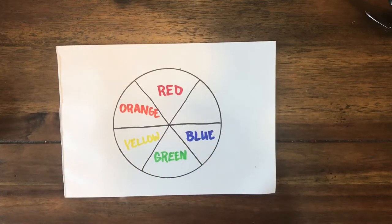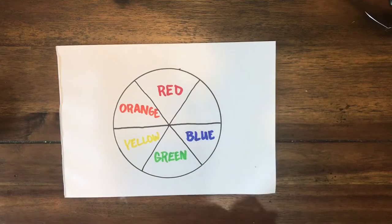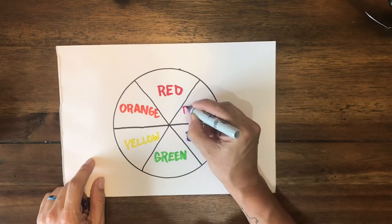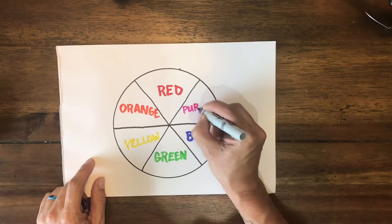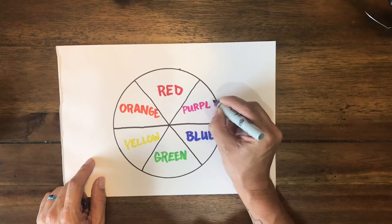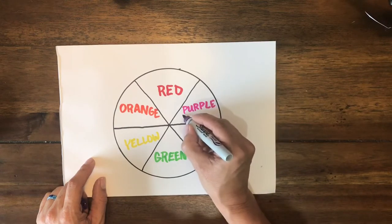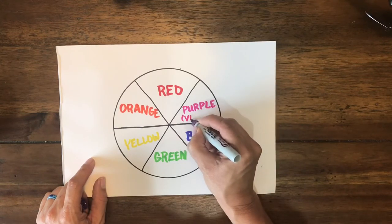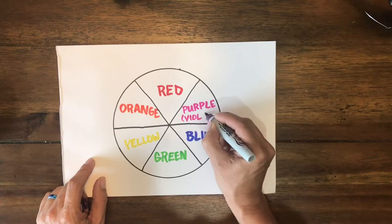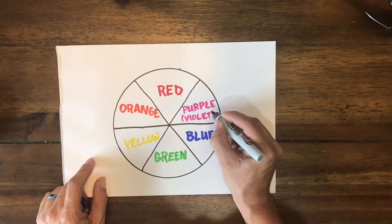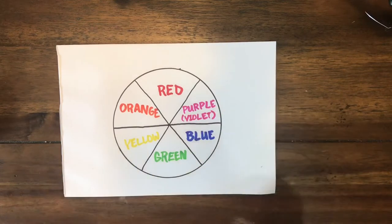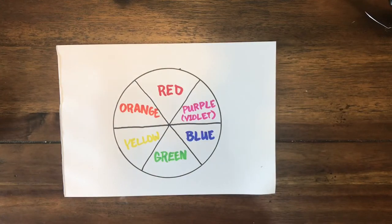And finally if I mix red with blue you get purple. My purple does not look very purple to me. Sometimes they refer to purple as violet when they're on color wheels, so violet there too.